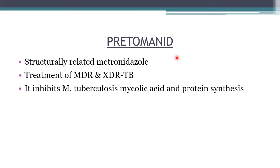Pretomanid is a newer nitroimidazole derivative structurally related to metronidazole. It is used for the treatment of multi-drug and extended drug resistant tuberculosis and inhibits both mycolic acid synthesis and protein synthesis in Mycobacterium tuberculosis.